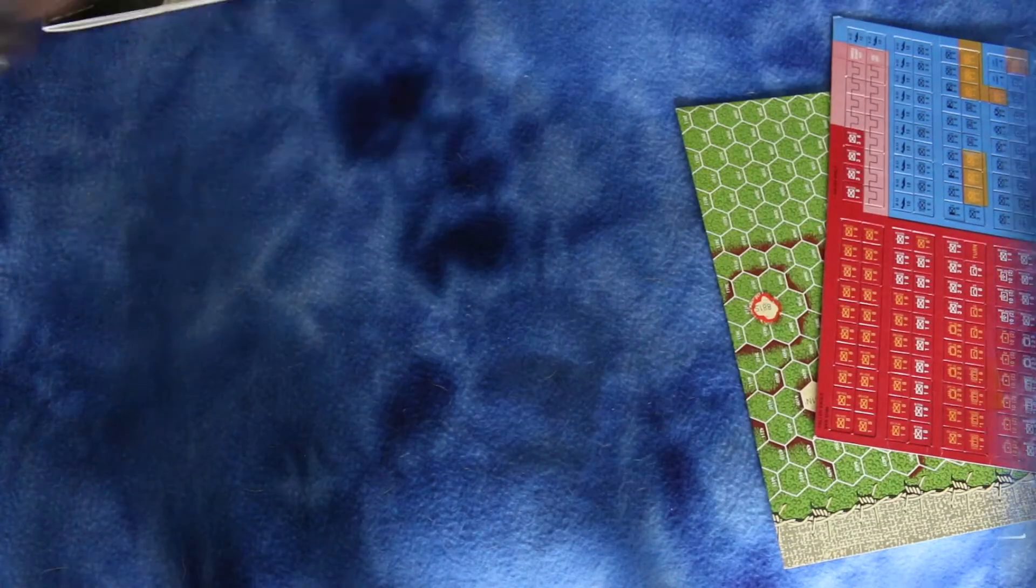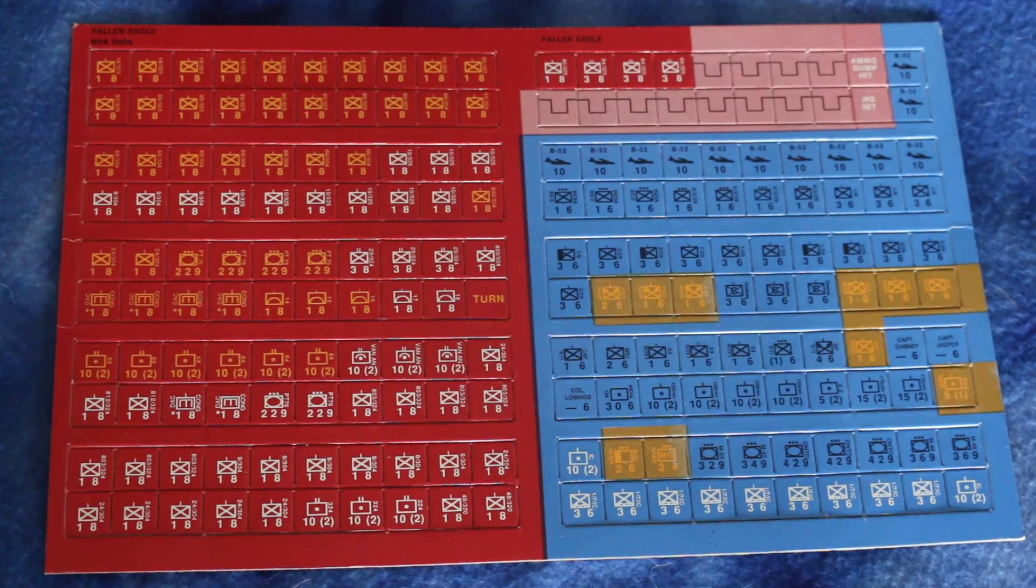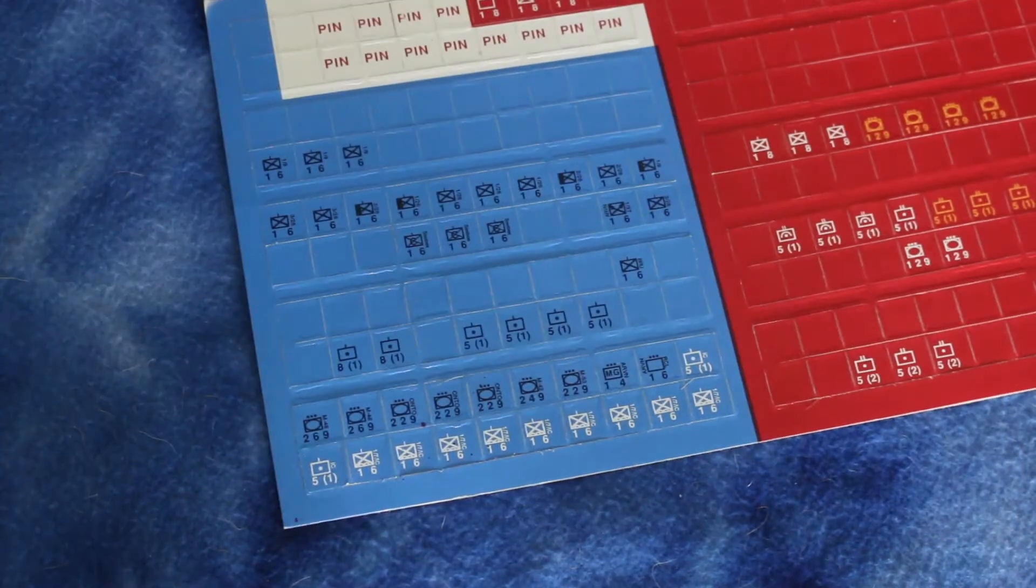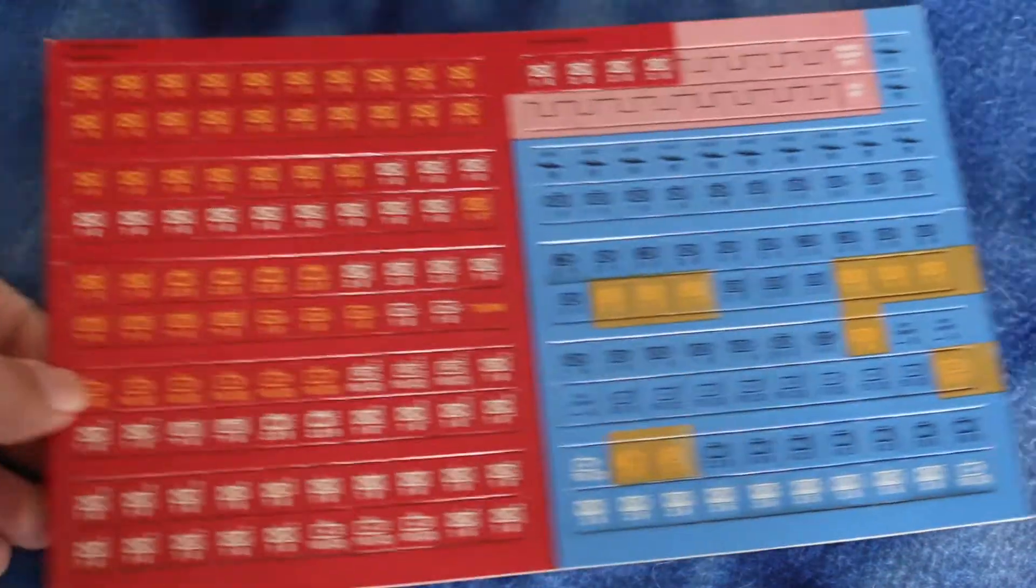All right, let's take a look at the counters now. Counters are standard NATO military symbols. They look all right for a game from this era. Looks like some of them are two-step units. They're all right. I mean, this is what I would expect from a magazine game from this era.